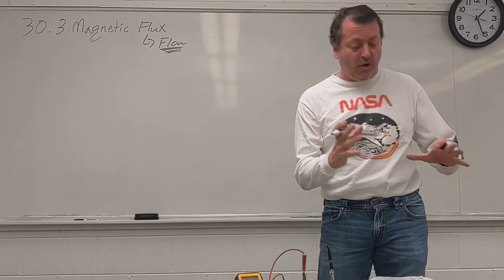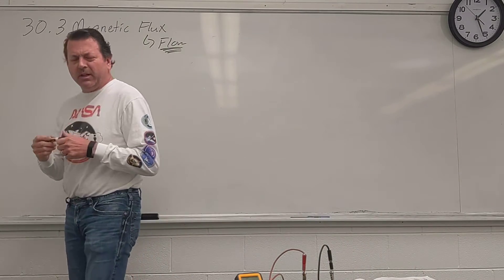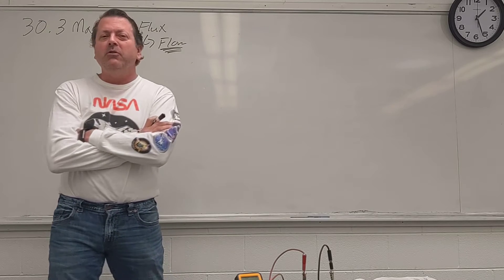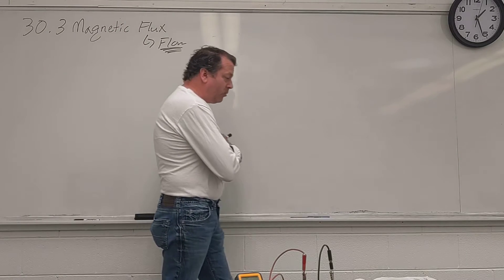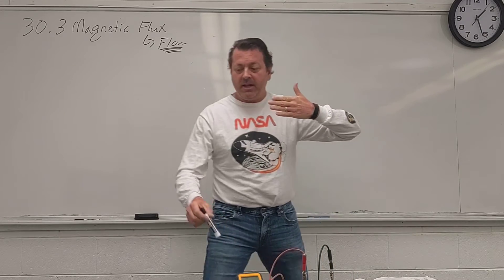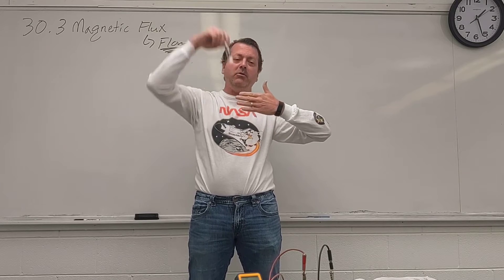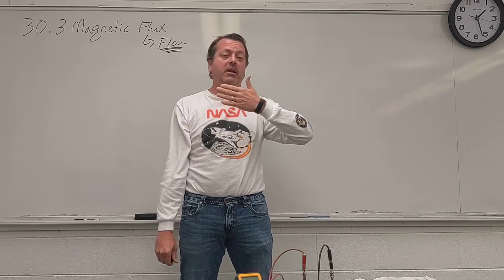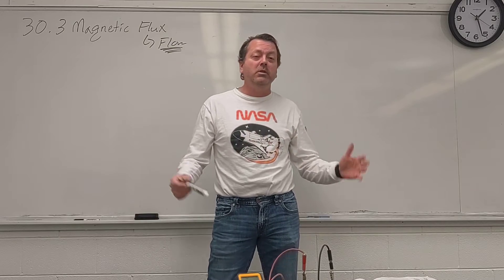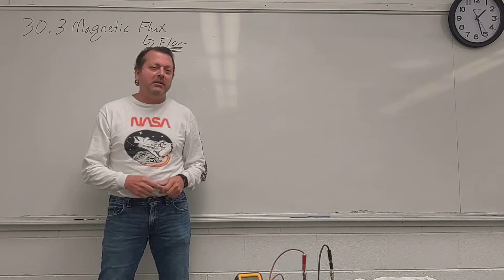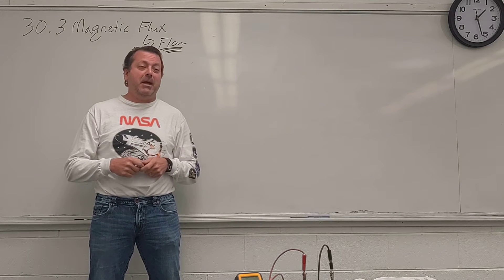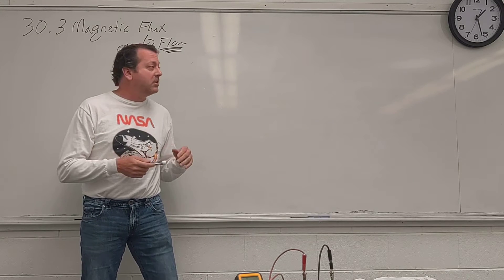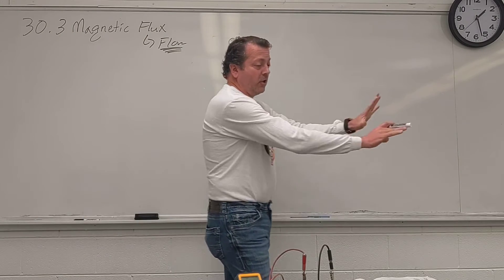We're going to talk about magnetic fields flowing. To visualize it, think of rain coming in your car or house windows. If you have a window that's nice and vertical and the rain is coming straight down like it normally does, how much rain comes in the window? Basically none. If it comes straight down on a vertical surface, especially with a little overhang, you're not going to get any rain through that window. That's zero flux — zero magnetic field flowing through that window.